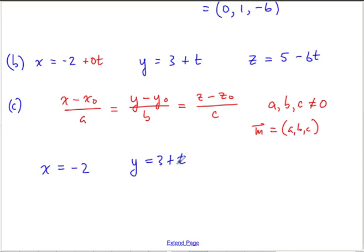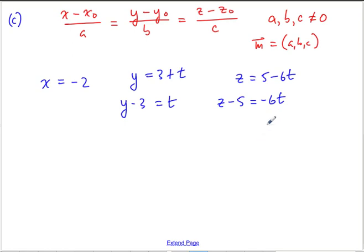Now, whether you choose to rearrange these or whether you remember this form is up to you. I'm going to rearrange it just so you can see that we end up in the same place. y equals 3 plus t. So we end up in the same place. I want to isolate t, so I get y minus 3 equals t.